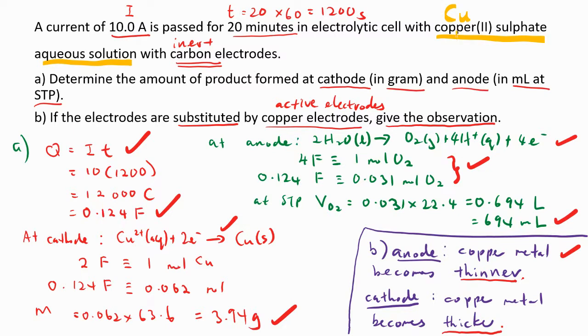Start with Q equals to It, and remember your time must multiply by 60 because we must change the time to seconds. Then after that, at cathode we write the reduction for copper. Then calculation, then final answer for the mass of copper.